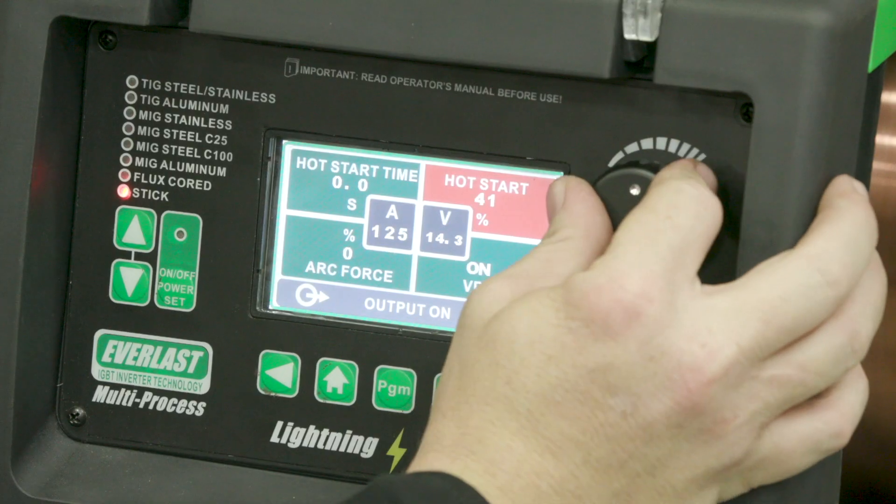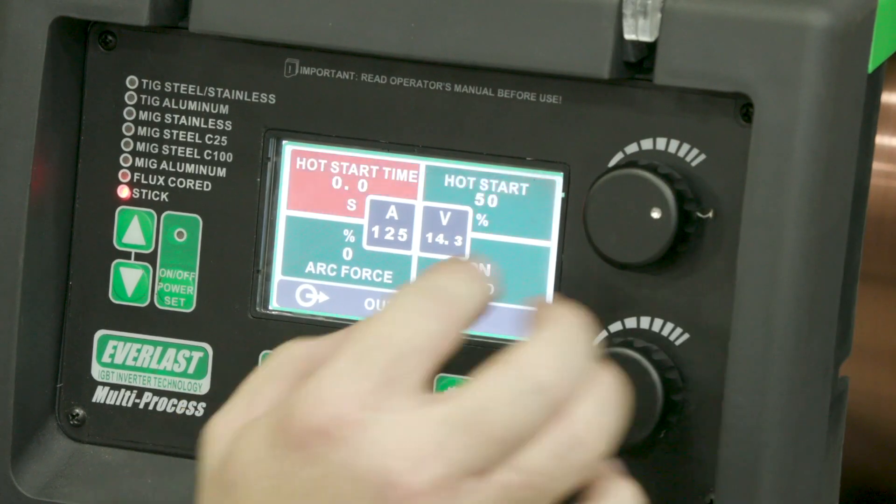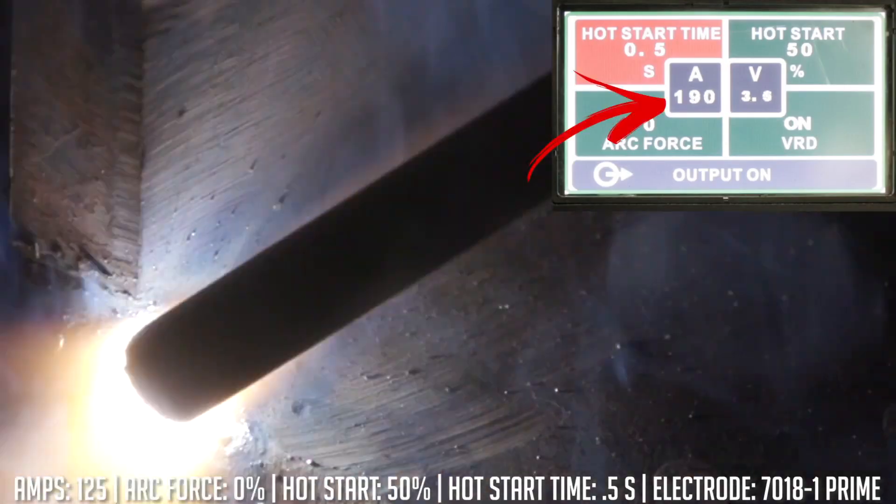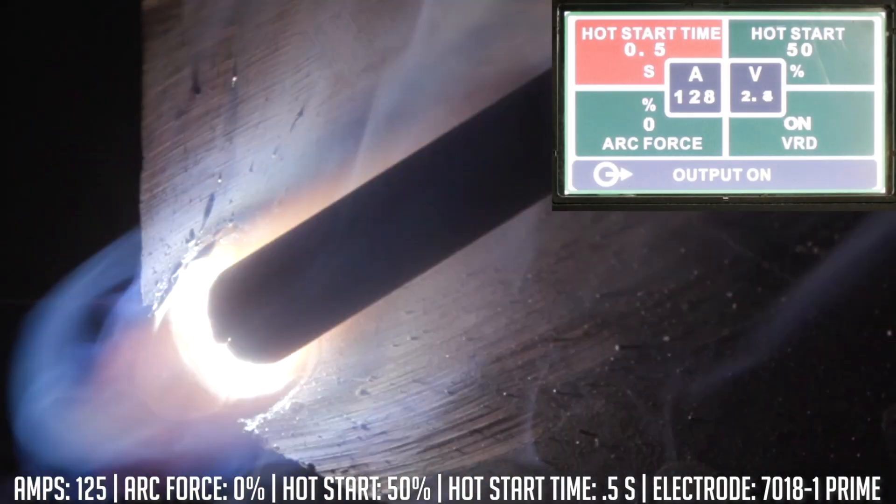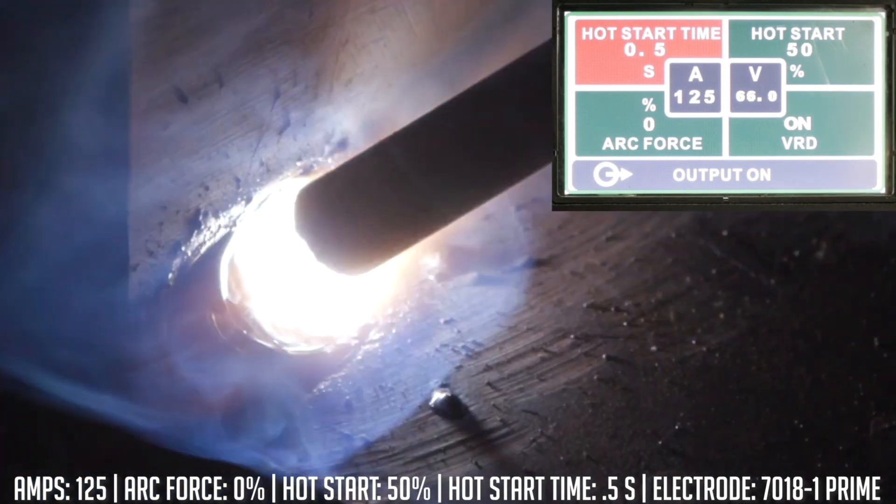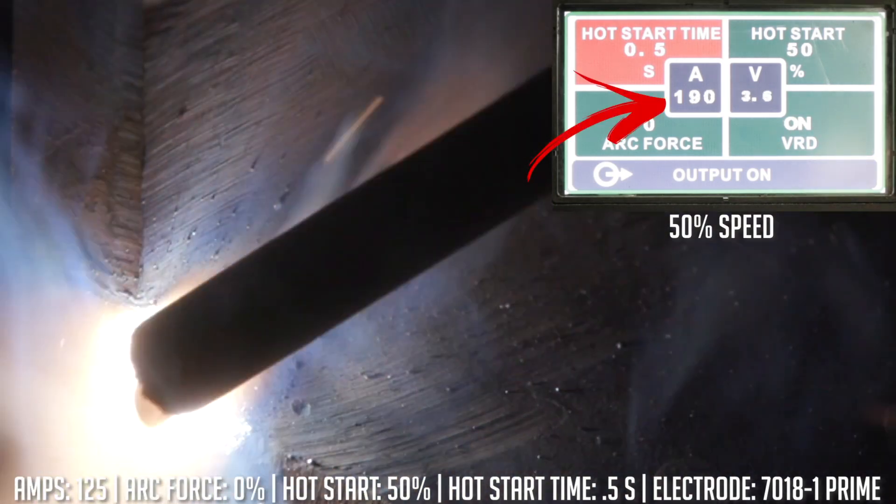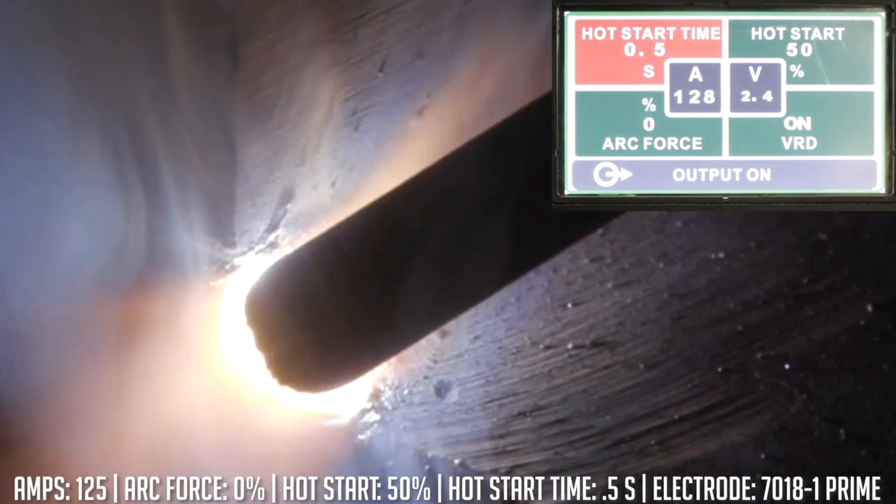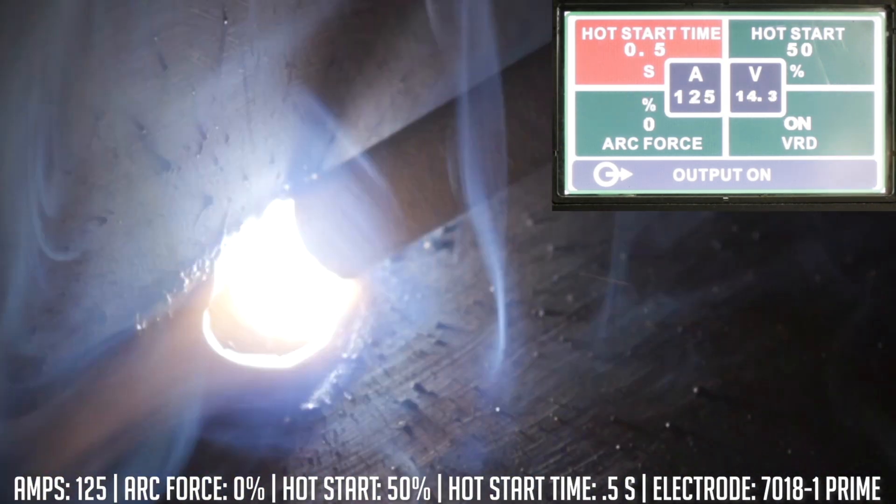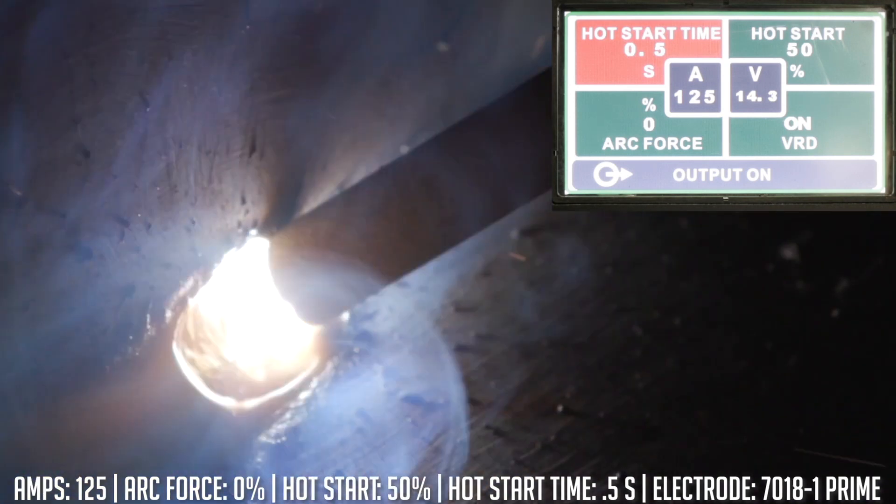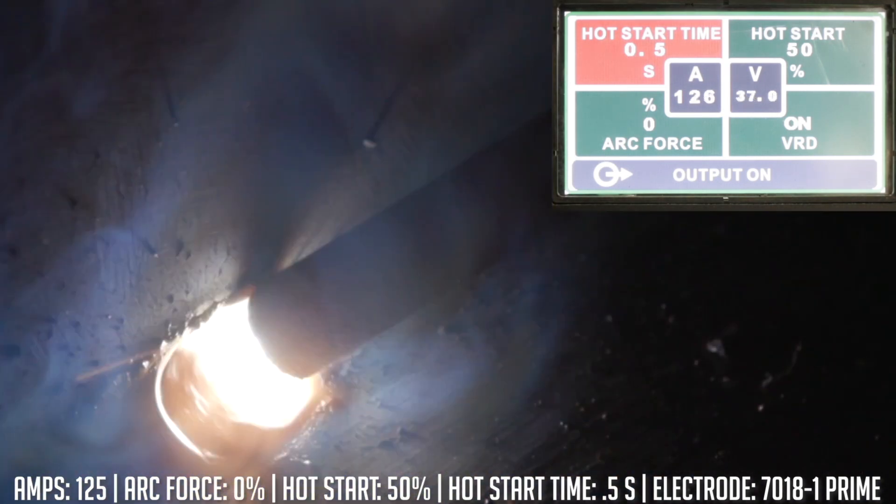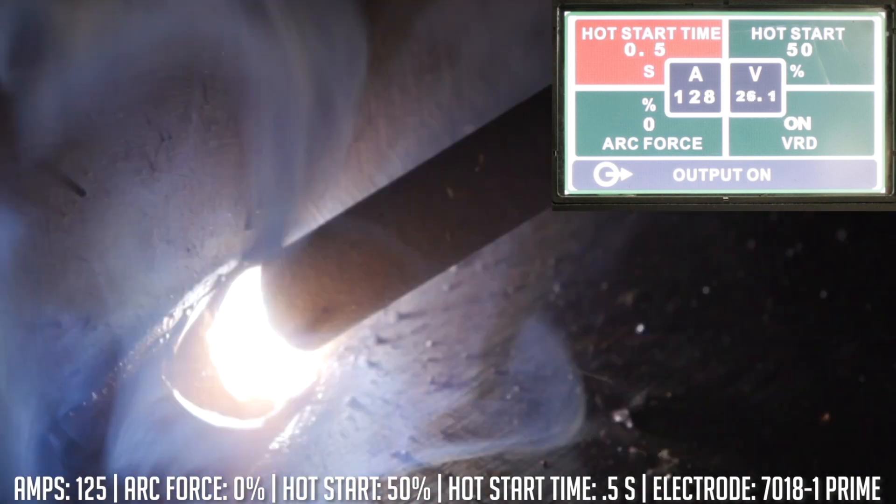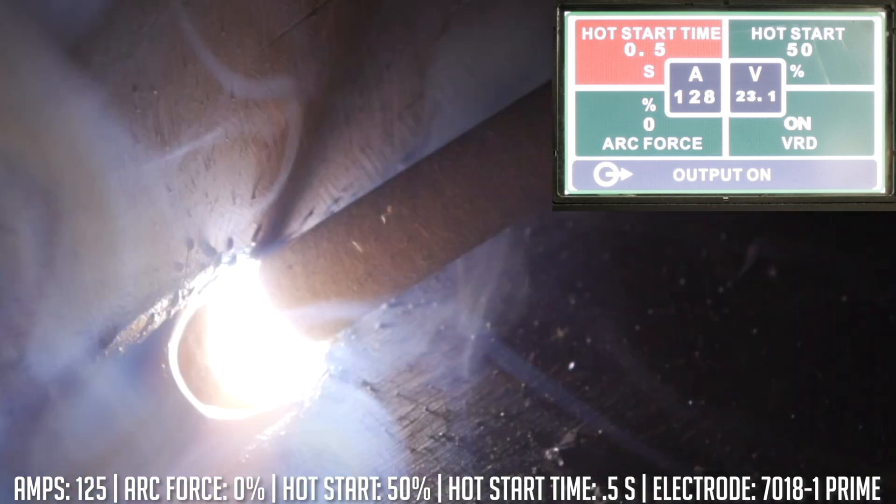Let's go ahead and add 50% on the hot start and about half a second on that and see what that does. What you should see on the arc initiation is my amps should jump up 50% higher than my current value. I'm running 125 amps baseline, it should jump up to about 187 and a half roughly for about half a second because I've got that hot start time set at 0.5. I'm gonna get that 188 amps for half a second.